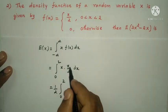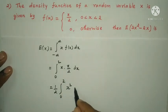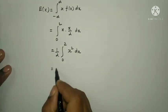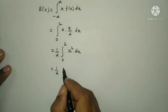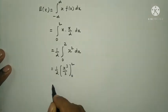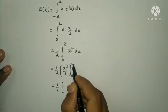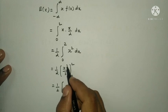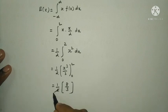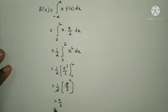So we get (1/2)·integral from 0 to 2 of x² dx. Integrating x² gives x³/3. Evaluating limits 0 to 2: upper limit gives 2³/3 = 8/3, lower limit gives 0. So (1/2)·(8/3) = 4/3. Therefore E(x) = 4/3.